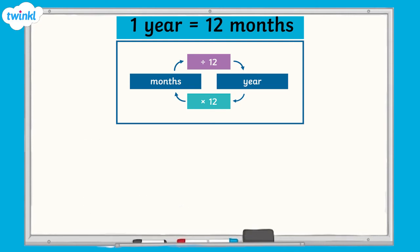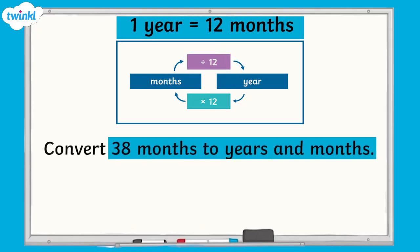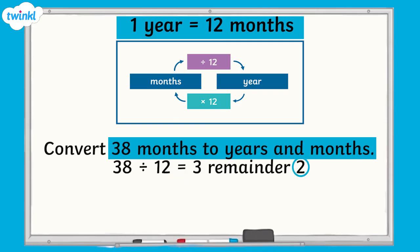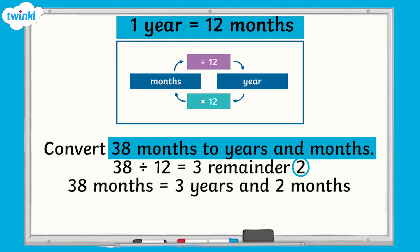We already know that there are 12 months in a year, so to convert months to years, we would divide the number of months by 12 to give us the number of years. If there is a remainder, this becomes the additional number of months. For example, to convert 38 months to years and months, we would divide 38 by 12, which equals 3 remainder 2. The remainder becomes the number of months, so 38 months equals 3 years and 2 months.